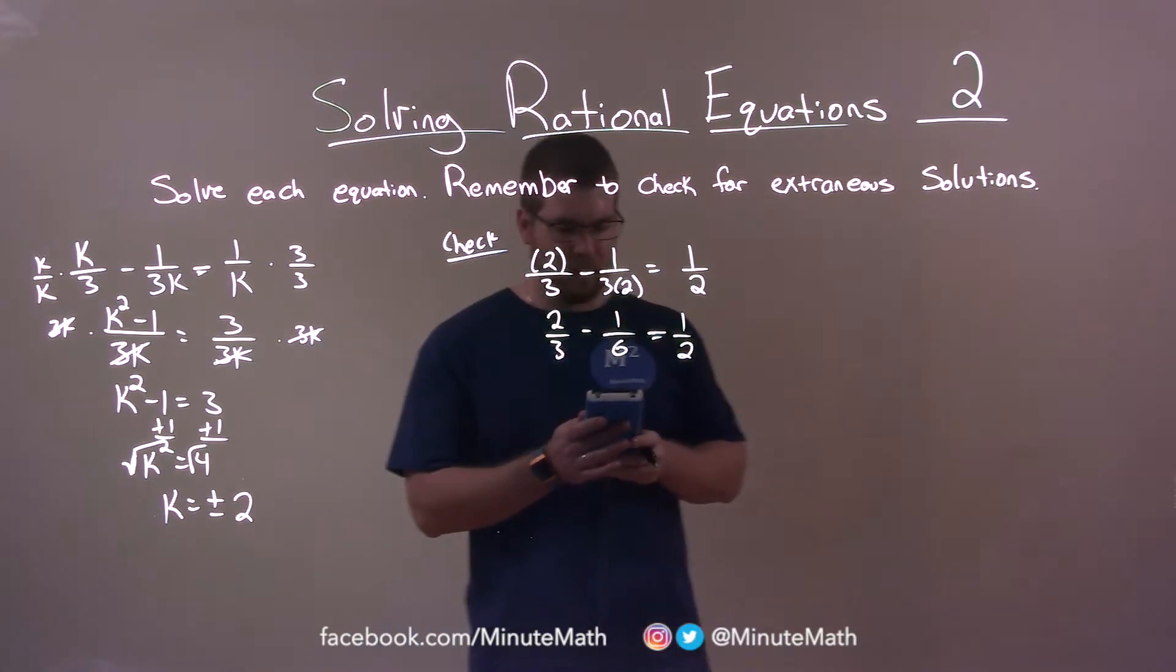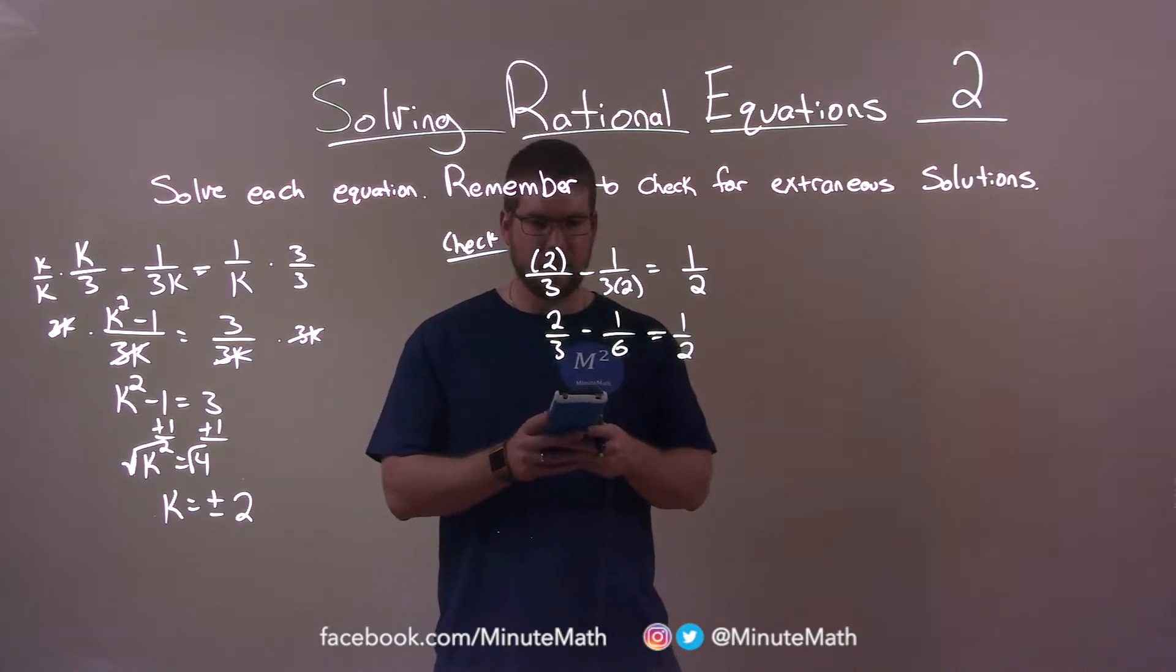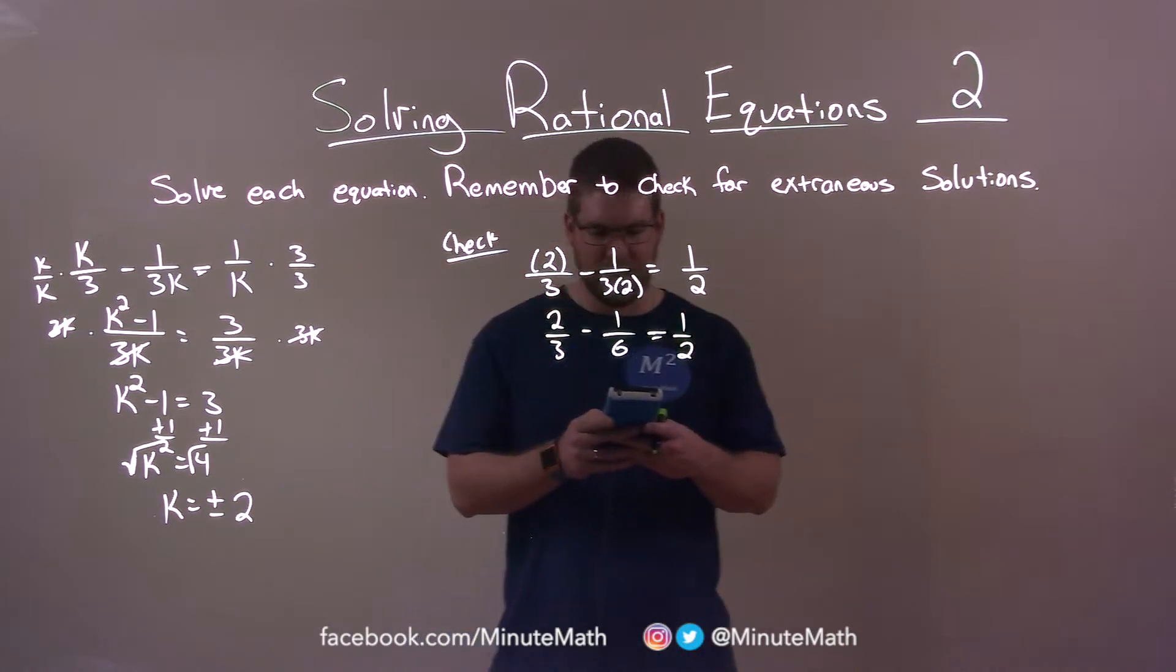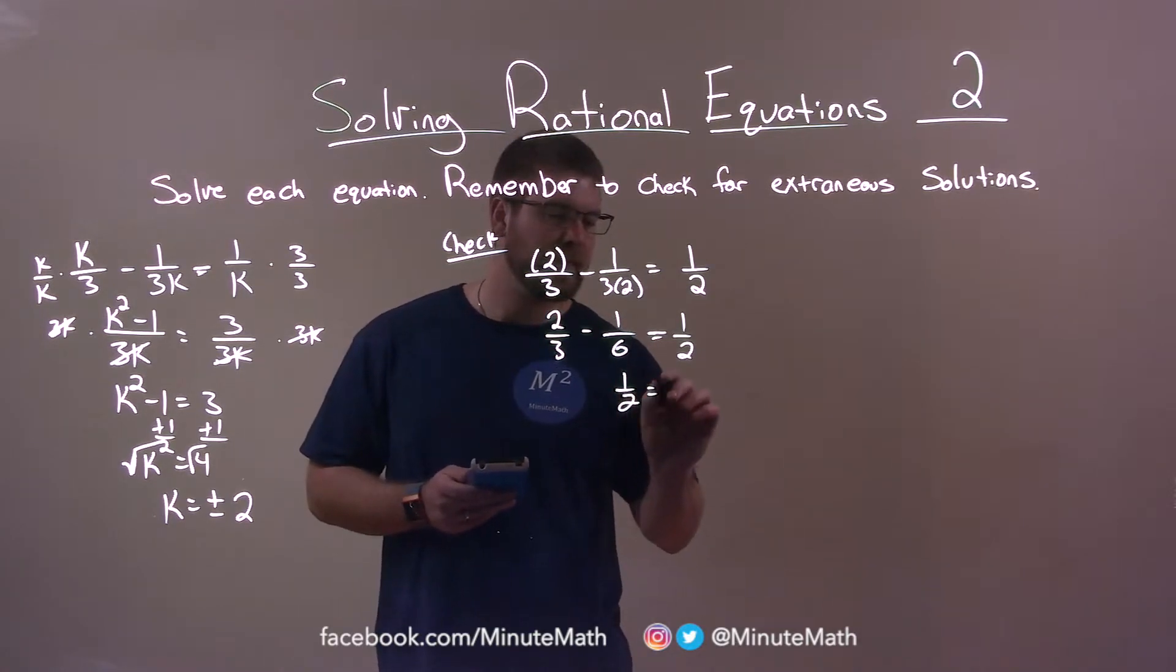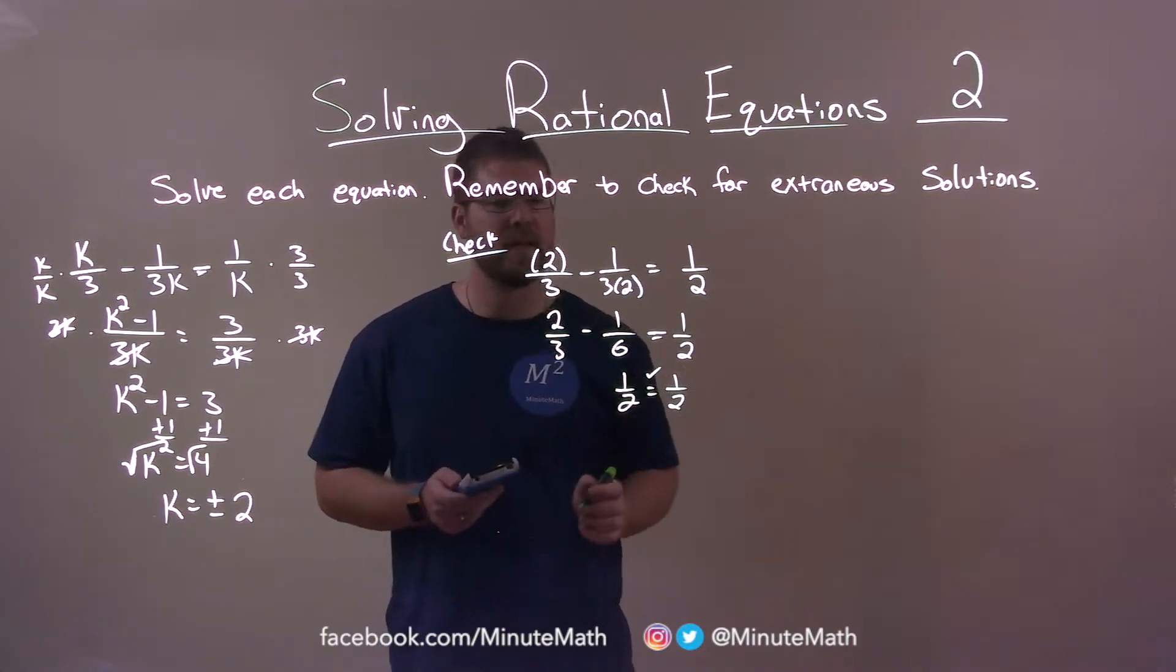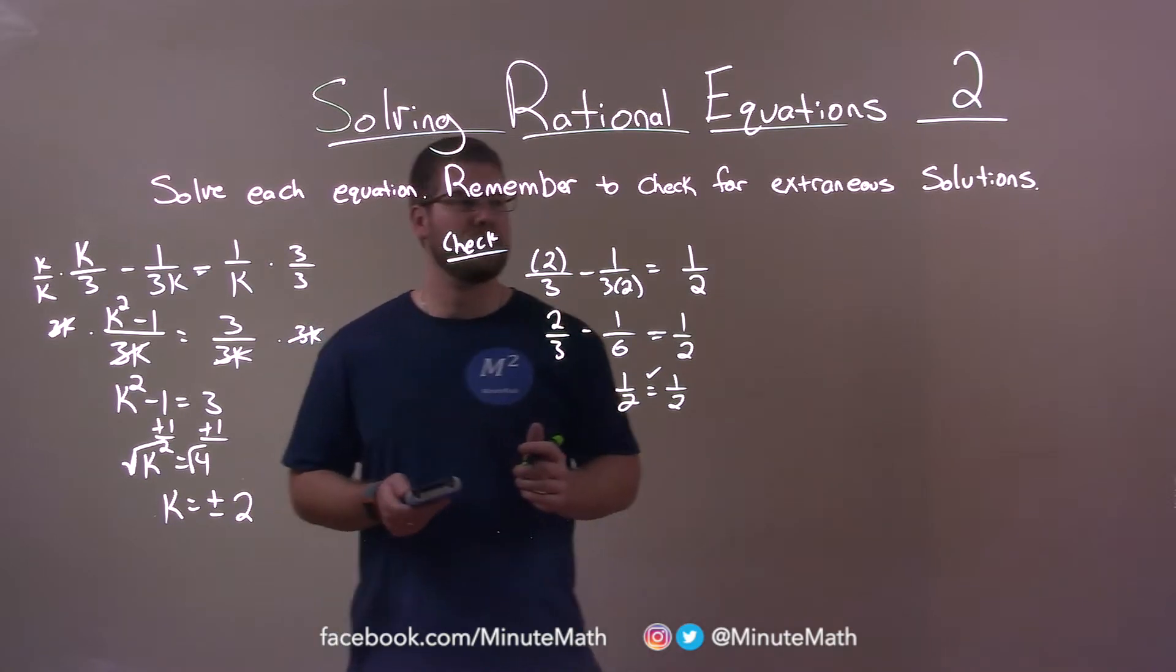Okay? Double check in here. 2 thirds minus 1 sixth should be 1 half. And it is. So, since the left and right-hand side are equal, positive 2 is the solution.